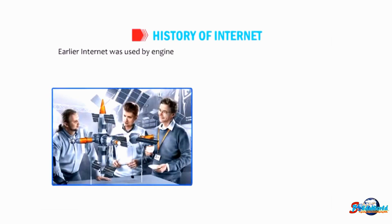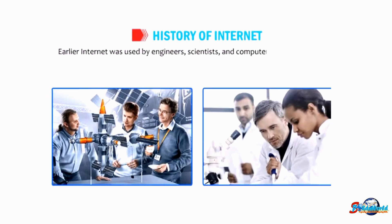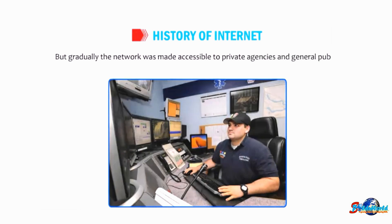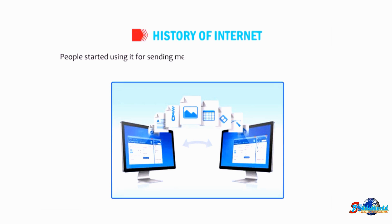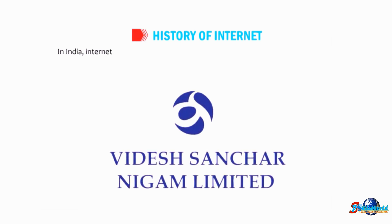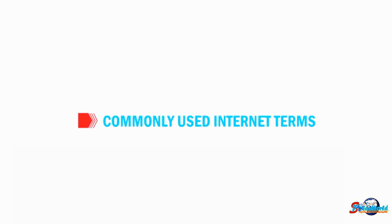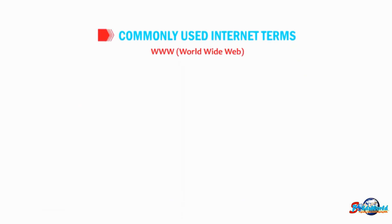Earlier, the internet was used by engineers, scientists, and computer experts for research purposes. But gradually the network was made accessible to private agencies and the general public. People started using it for sending messages and files between any two computers. In India, internet services started on 15th August 1995 through a government-owned company, VSNL — Videsh Sanchar Nigam Limited.